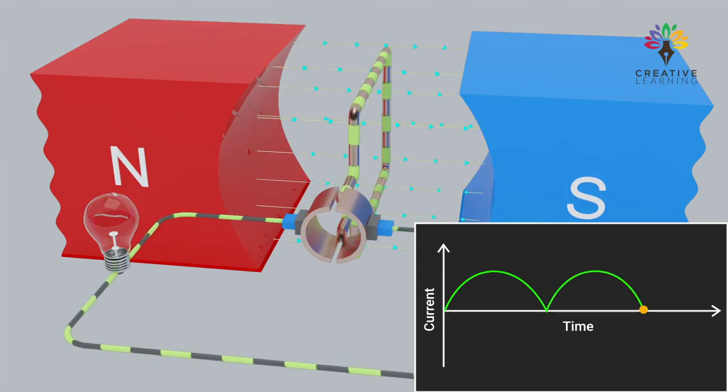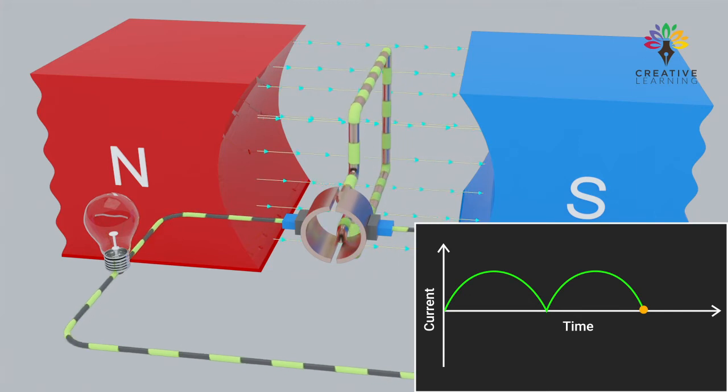This design ensures a steady flow of direct current, DC, from the generator, which can then be used to power various devices and systems.